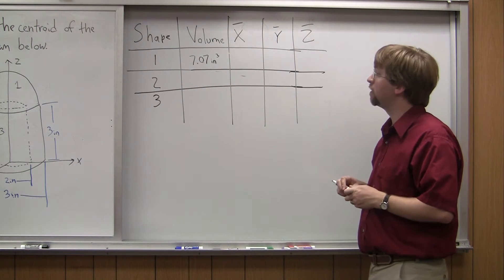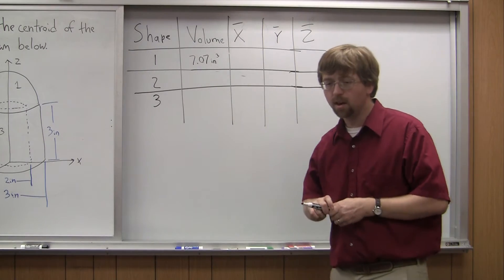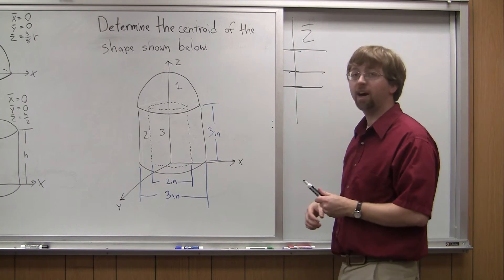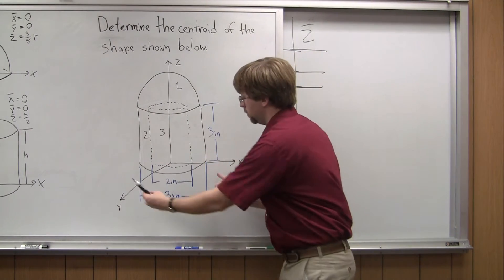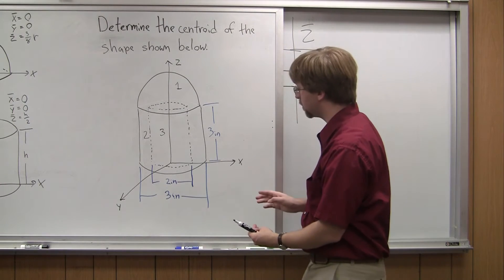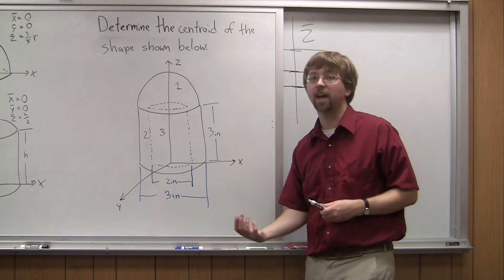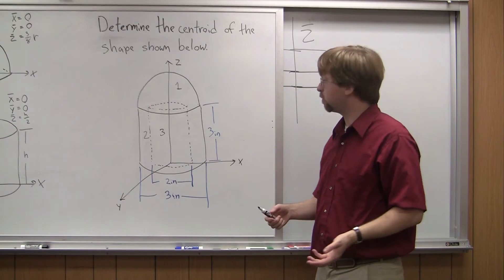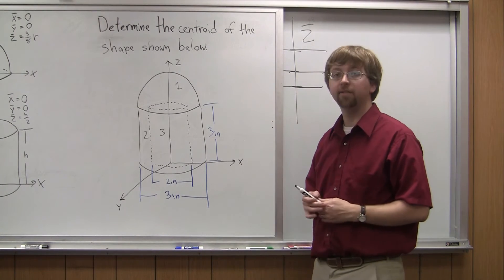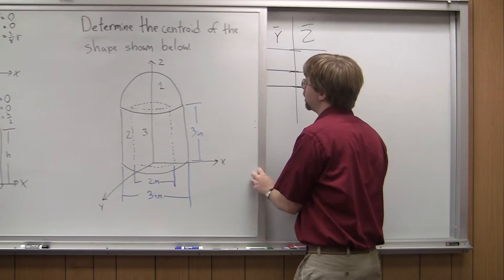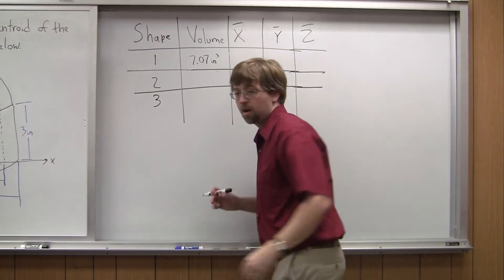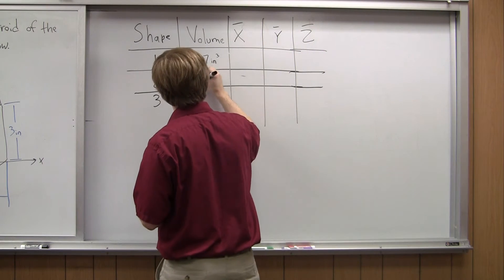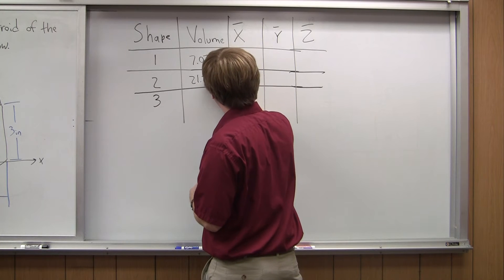That's the volume of my hemisphere. Next, I've got the cylinder. The volume of a cylinder is pi r squared times h. Part two is a cylinder with a diameter of 3 inches, so my radius is again 1.5 inches. Pi times 1.5 squared times my height of 3 inches gives me a volume of approximately 21.2 cubic inches.